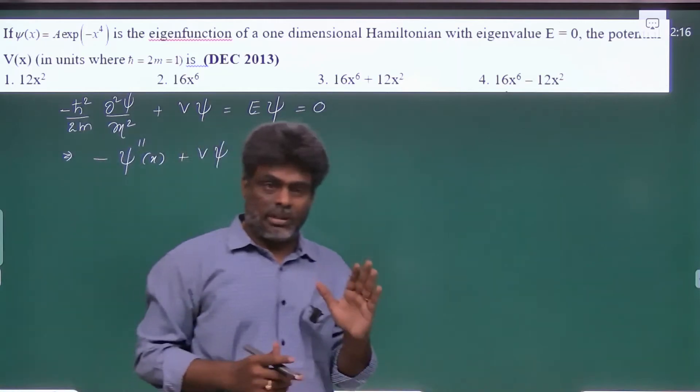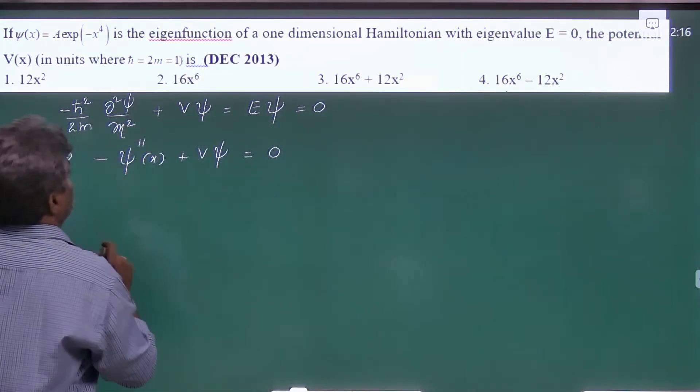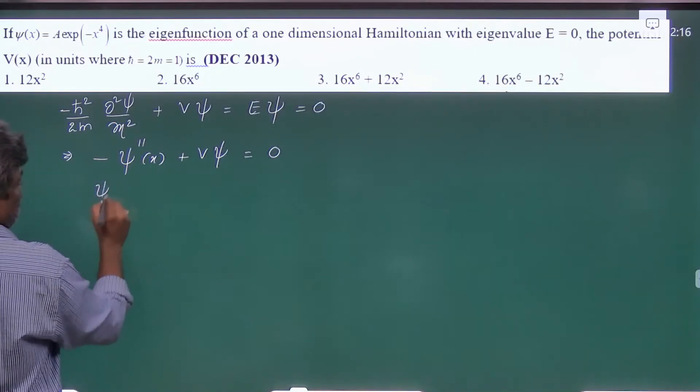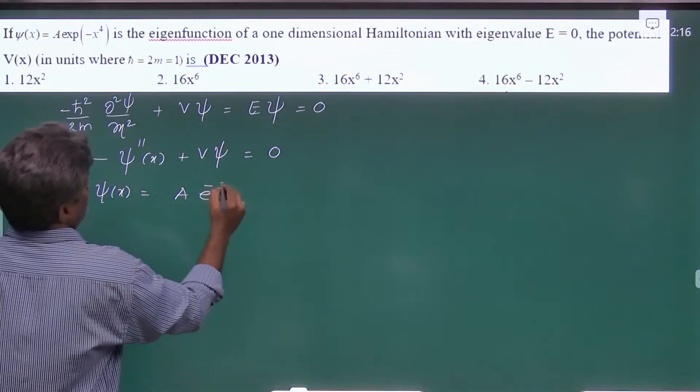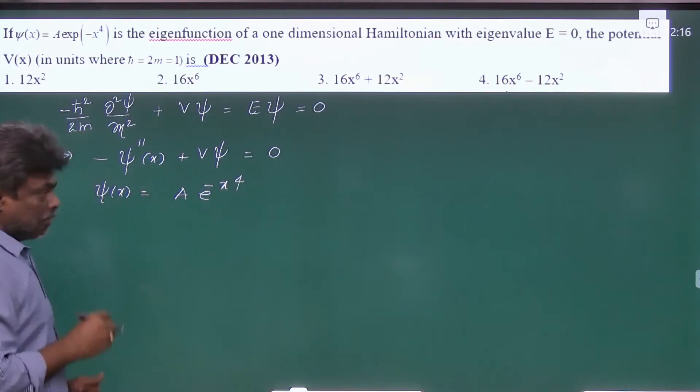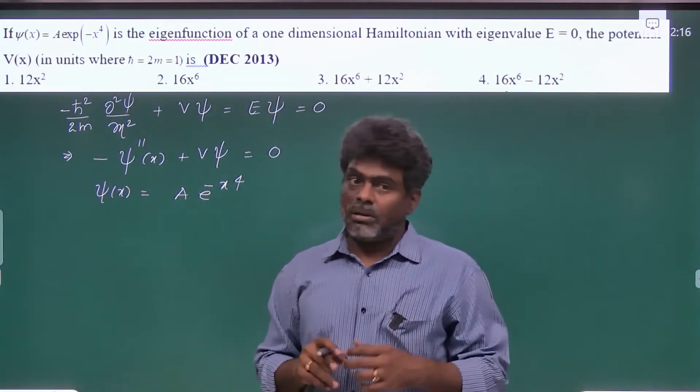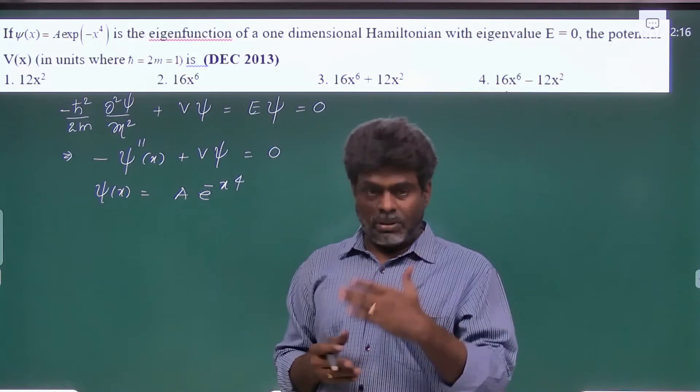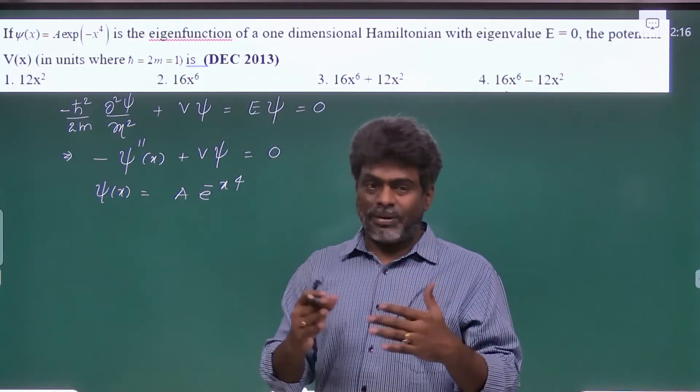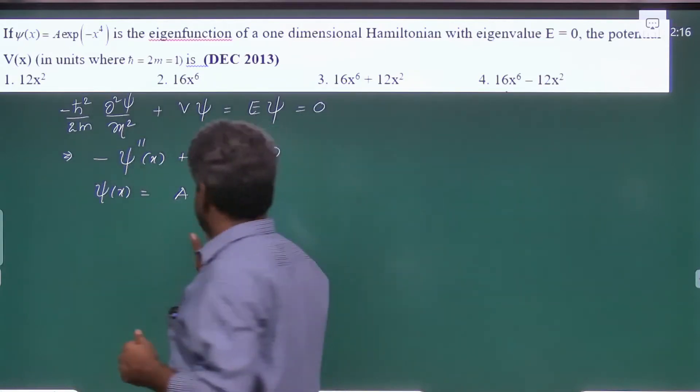Whatever wavefunction they have given, just take it and find the second derivative. Here ψ(x) = A·e^(-x^4), where we are applying Schrödinger's equation. Differentiate the wavefunction, and if possible, after differentiation try to rewrite the answer in terms of ψ, otherwise it will become lengthy.